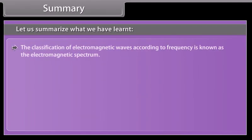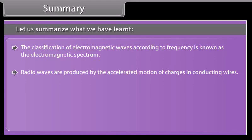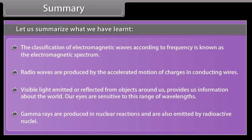The classification of electromagnetic waves according to frequency is known as the electromagnetic spectrum. Radio waves are produced by the accelerated motion of charges in conducting wires. The visible light emitted or reflected from objects around us provides us information about the world. Our eyes are sensitive to this range of wavelengths. Gamma rays are produced in nuclear reactions and are also emitted by the radioactive nuclei.